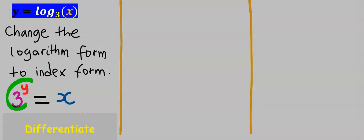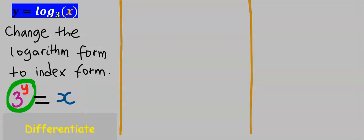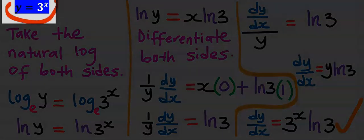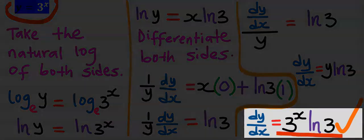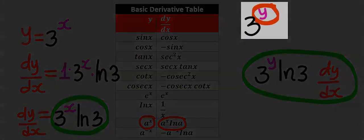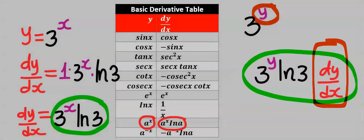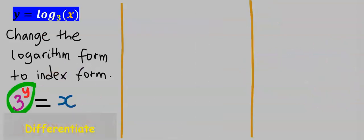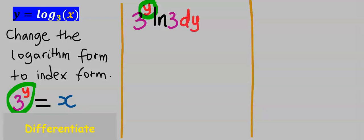Next, we are going to differentiate both sides separately. Differentiate 3 to the power of y. When you differentiate a constant to the power of x, your answer will be that constant to the power of x multiplied by the natural log of that constant. But with the presence of y, you have to multiply the result with dy/dx, according to implicit differentiation.